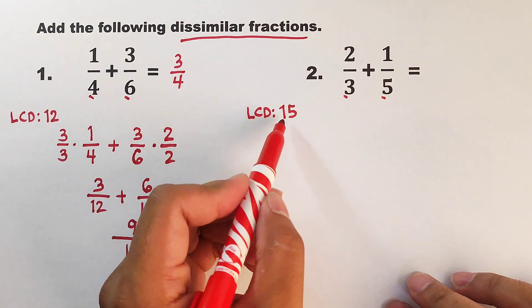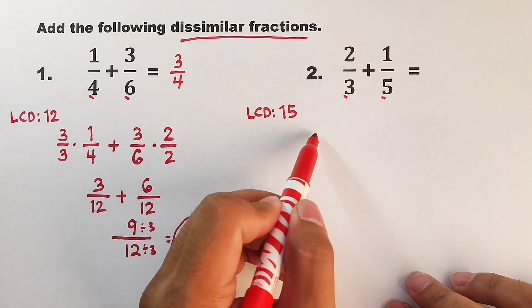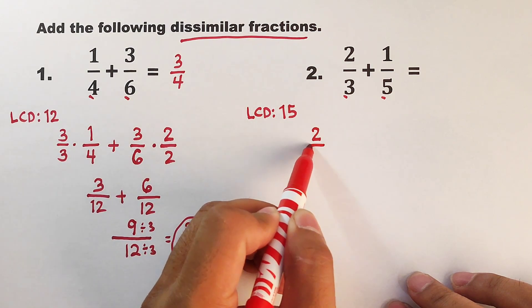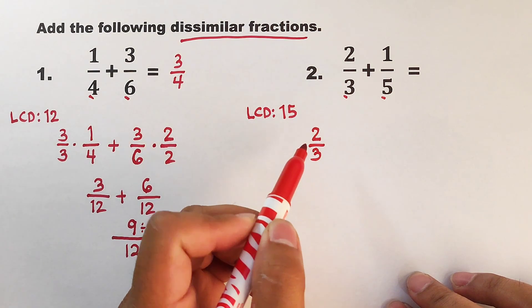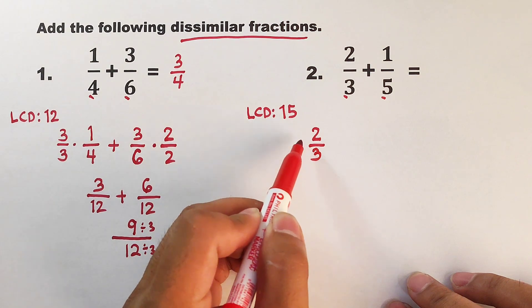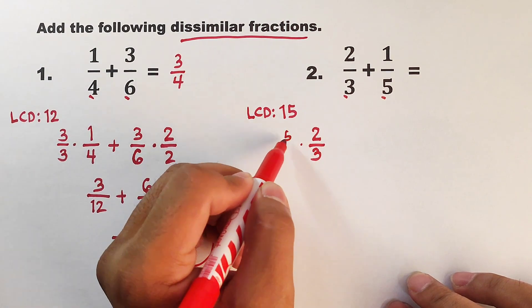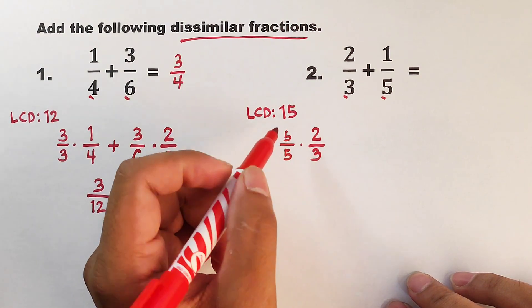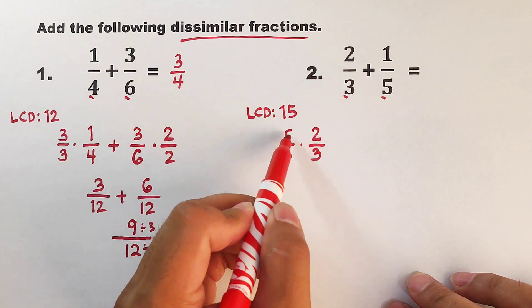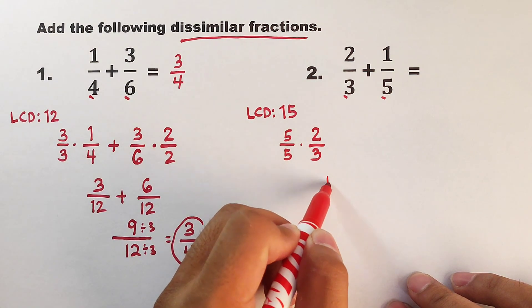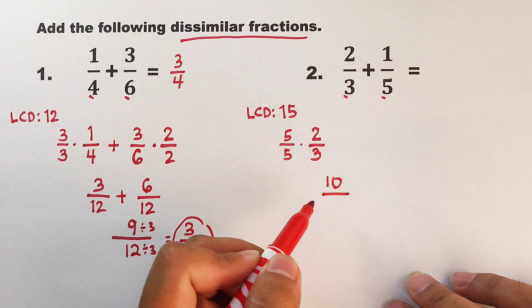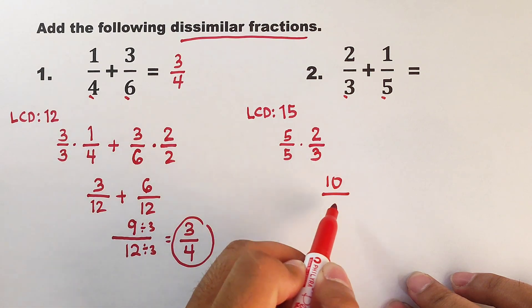So in this case, we will think of a number that we will multiply with 3. And very good. That is 5. So we will multiply the whole fraction by 5 over 5. In this case, this 5 times 2 is equal to 10 over 5 times 3. That would be 15.